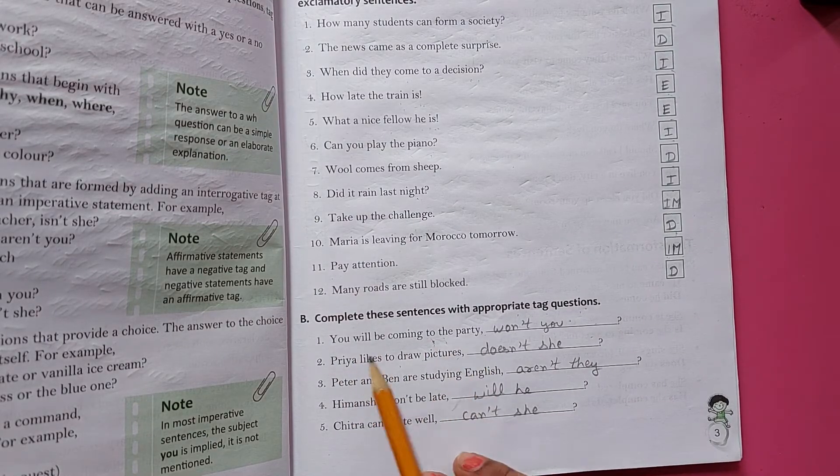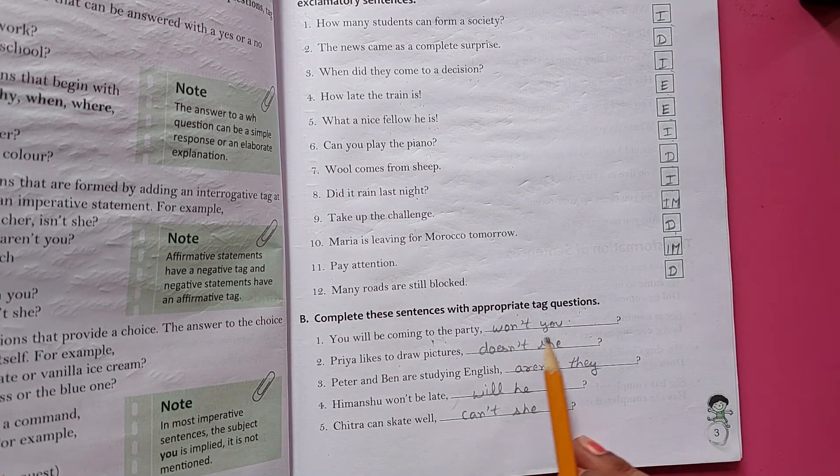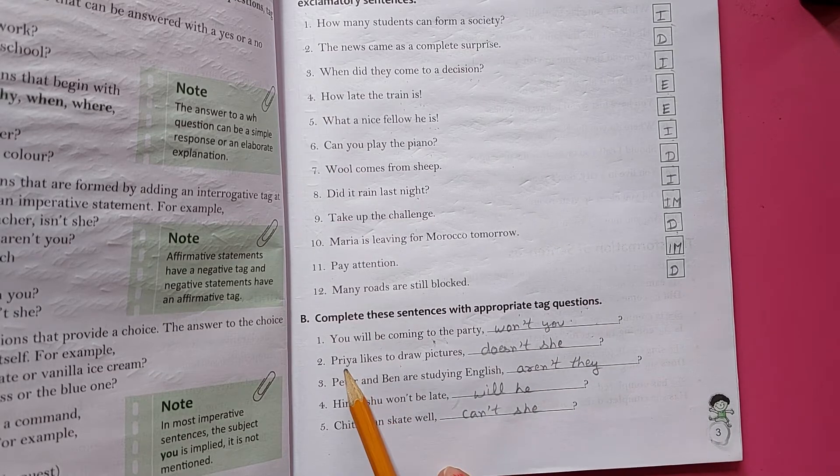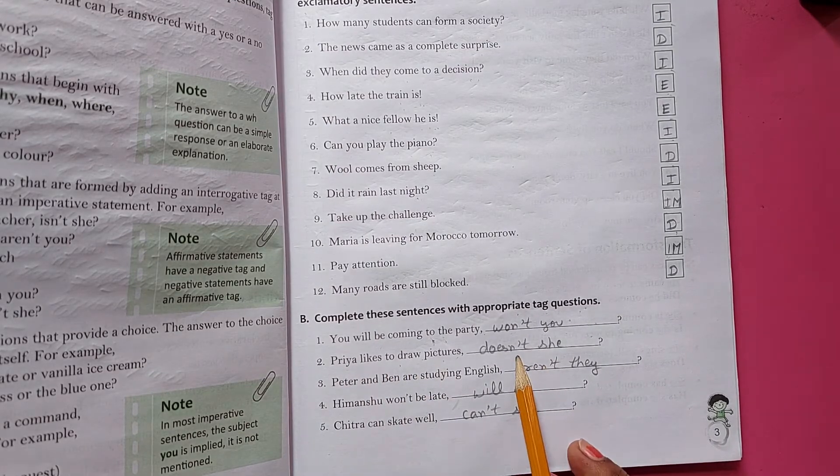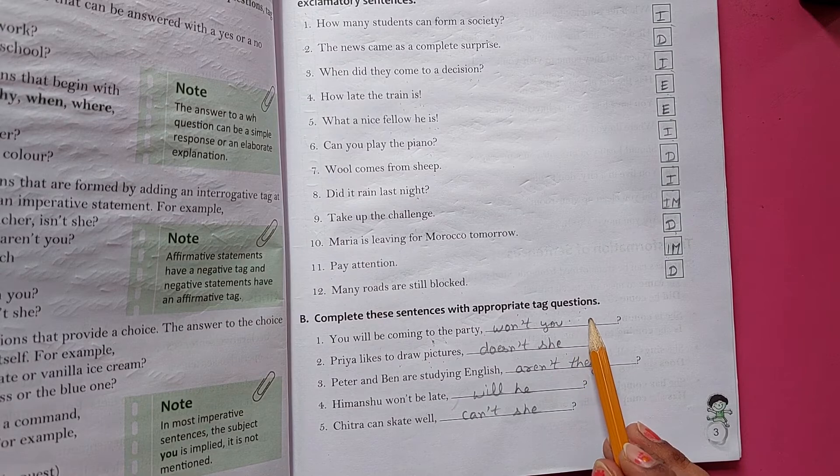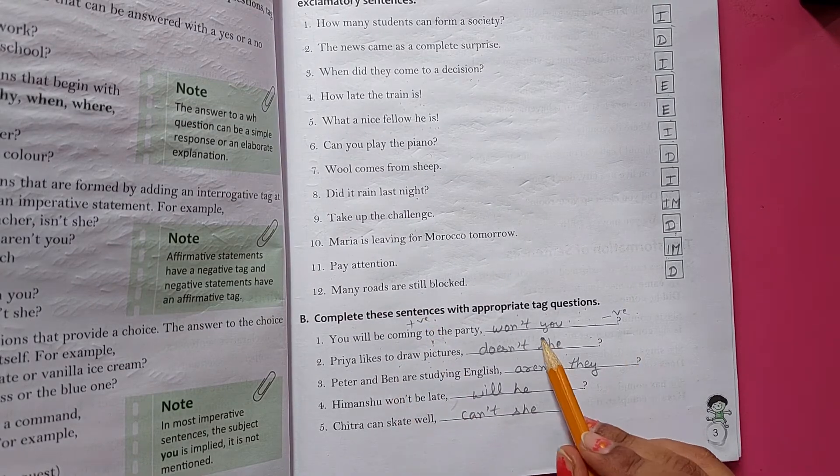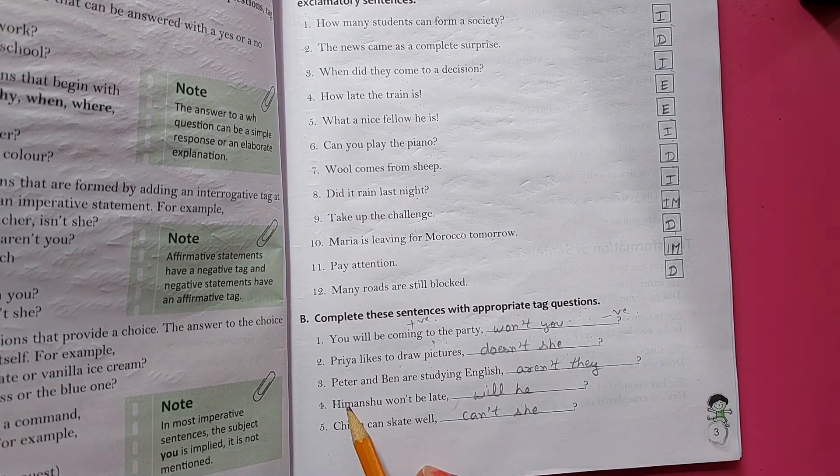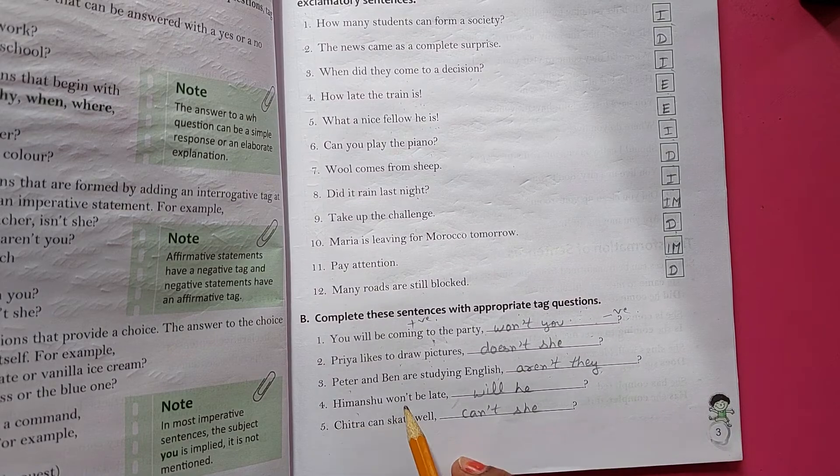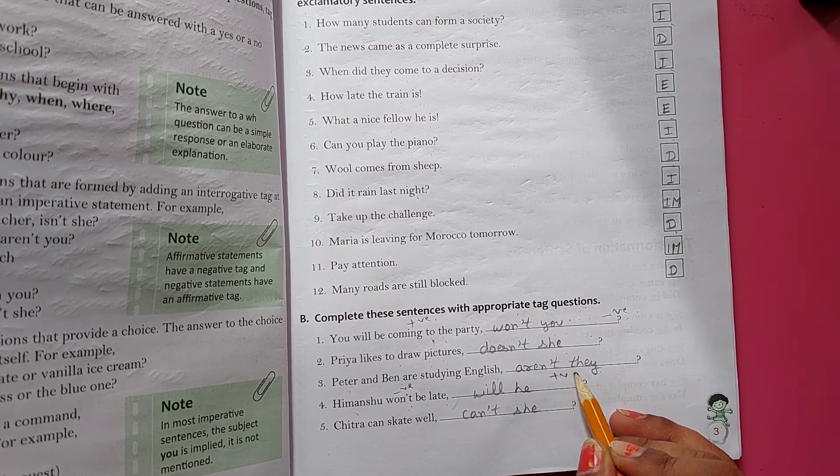Like this, you will be coming to the party, won't you? The tag questions are in short form. Priya likes to draw pictures, doesn't she? The tag questions are in negative form. Peter and Ben are studying English, aren't they? Himanshu won't be late. Yeh negative tha aur positive mein aagya. Will he?